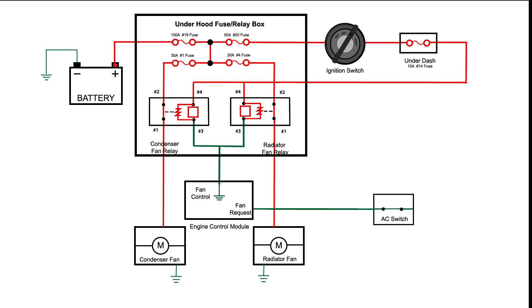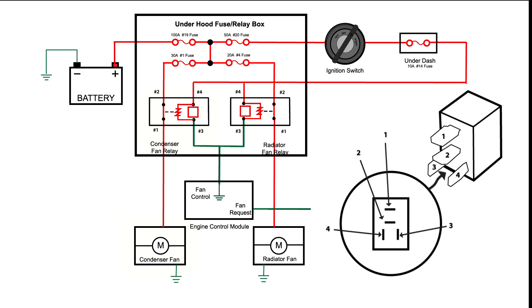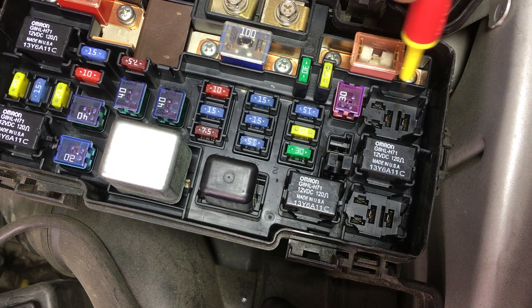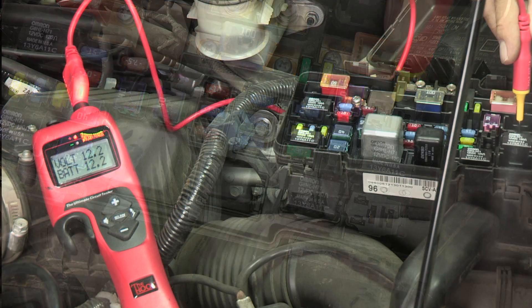Since the condenser fan is intermittent, we suspect the condenser fan relay or the condenser fan motor as being the cause. We will access the complete circuit at the relay terminals to determine the exact problem using the power probe hook.